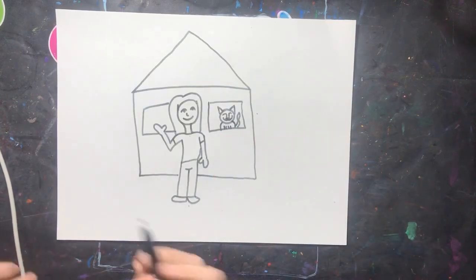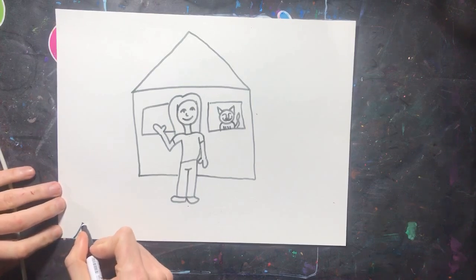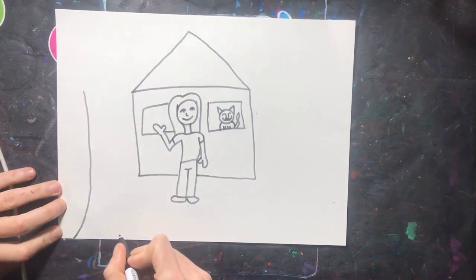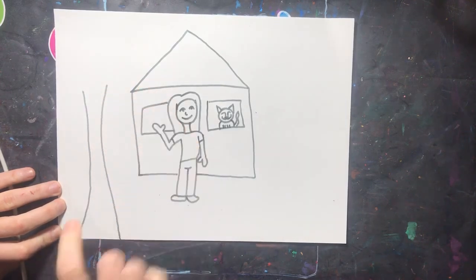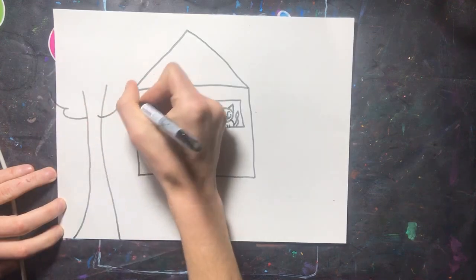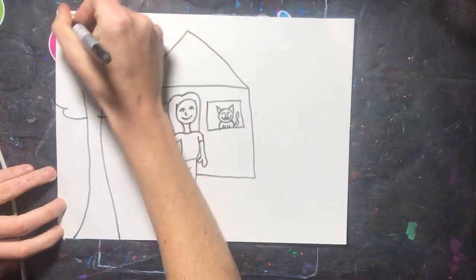Next, we're going to show near and far. Let's start with near. Let's put a tree at the very bottom of our paper. To make it look near, it needs to be at the bottom and it needs to be big. So this tree is going to go all the way to the top of your paper.